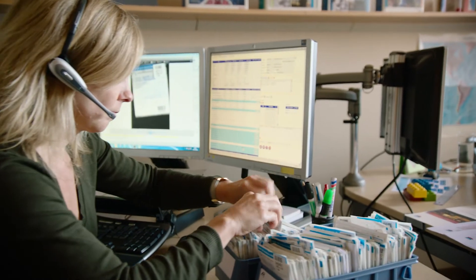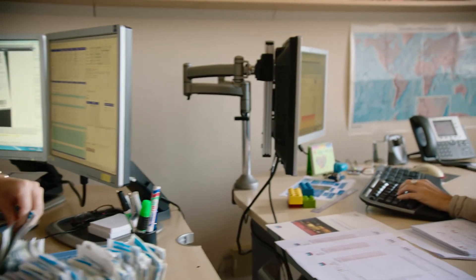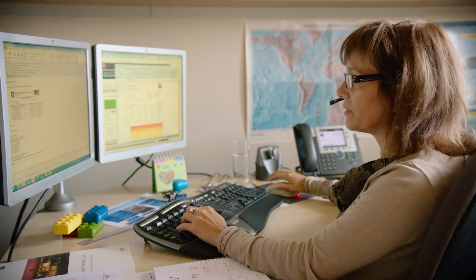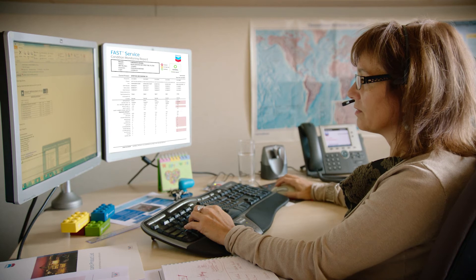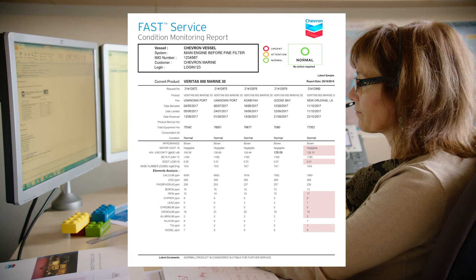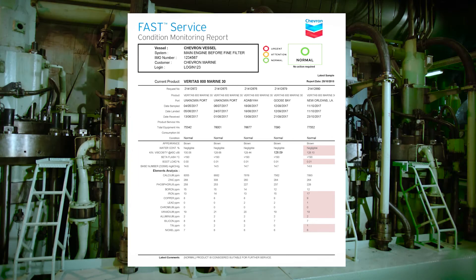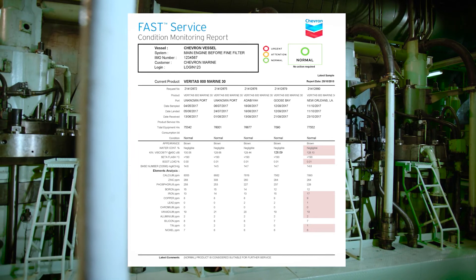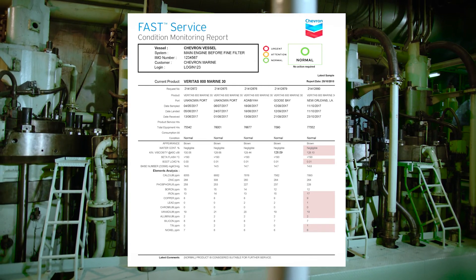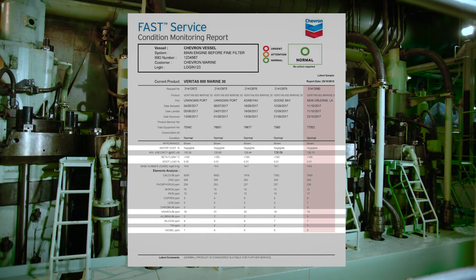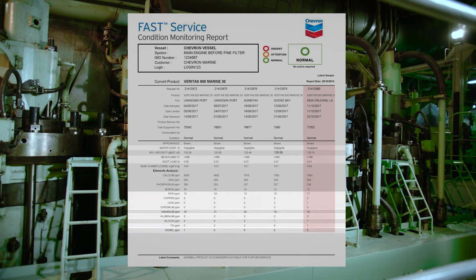Once tests are complete, our in-house experts review the data, provide comments, and make recommendations on trends observed in the report. Based on the comments of our marine scientists, the final report shows a clear traffic light status. The conclusions are based on a combination of Chevron's experience and OEM guidelines. For each specific test schedule, the results are evaluated in three main categories: Fluid Properties, Contaminants, and Wear Debris.